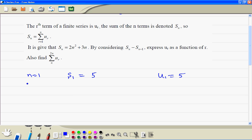Then we find the sum of the first two terms. So we substitute n equal to 2, so 4 times 2 plus 3 times 2, that's 14. So the sum of the first and second terms is 14. Therefore, the first term we know, therefore the second term must be 9.